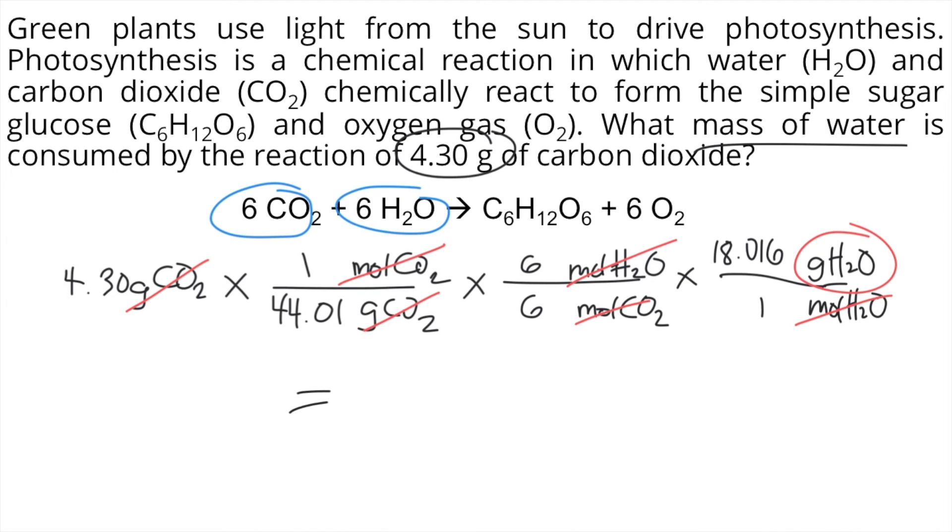Since we already reached our final desired unit, we can now solve this using our calculator. So we'll just type 4.30 times 1 divided by 44.01 times 6 divided by 6 times 18.016 divided by 1. And you will get approximately 1.76 grams of water.